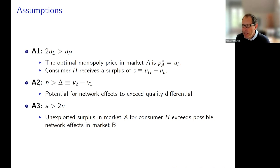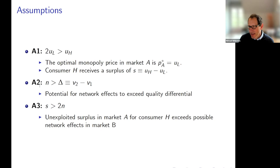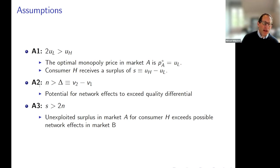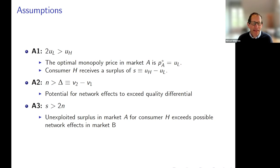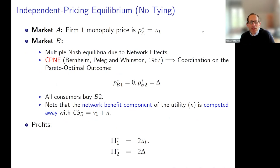That means consumer H has information rents — consumer H receives a surplus of what I'll call S, which is the difference between U_H and U_L. Assumption two is that N, the network benefit, is bigger than delta — where delta is the quality difference v2 minus v1. This says there's at least a potential for network effects to exceed the quality differential: if you can get everyone on the bandwagon, you actually have a better product than the rival. The third assumption is that the information rent S is bigger than 2 times the network benefit N.